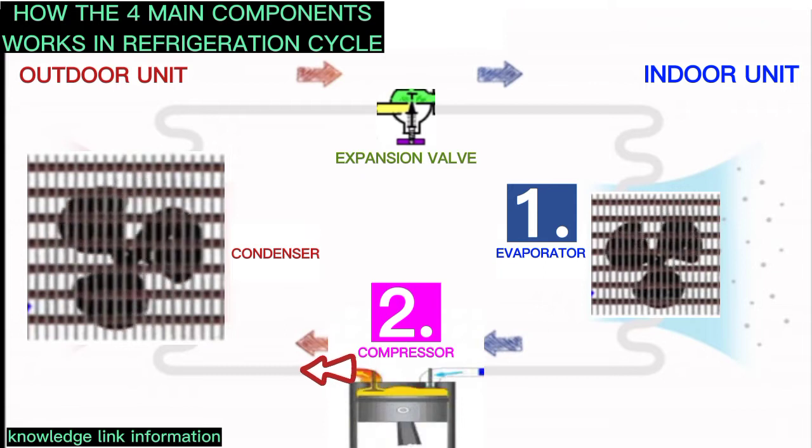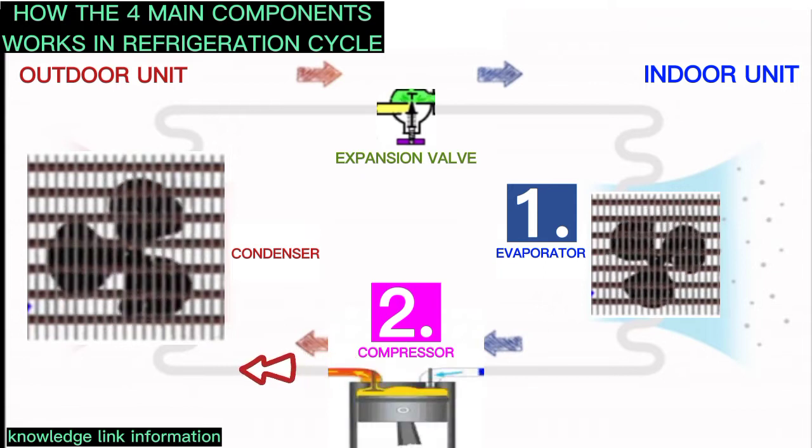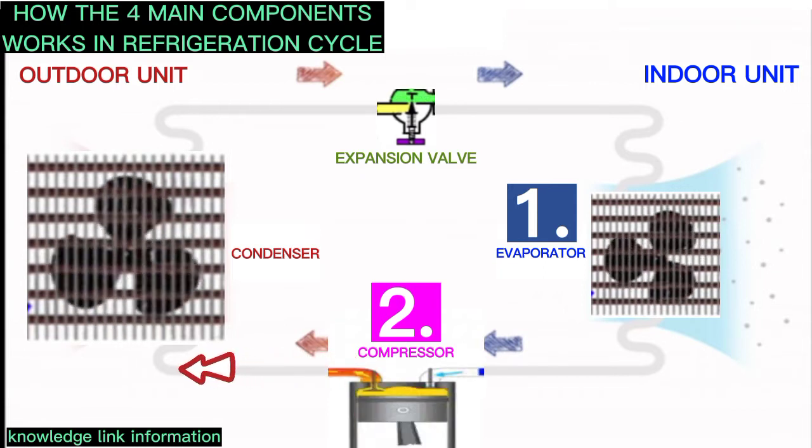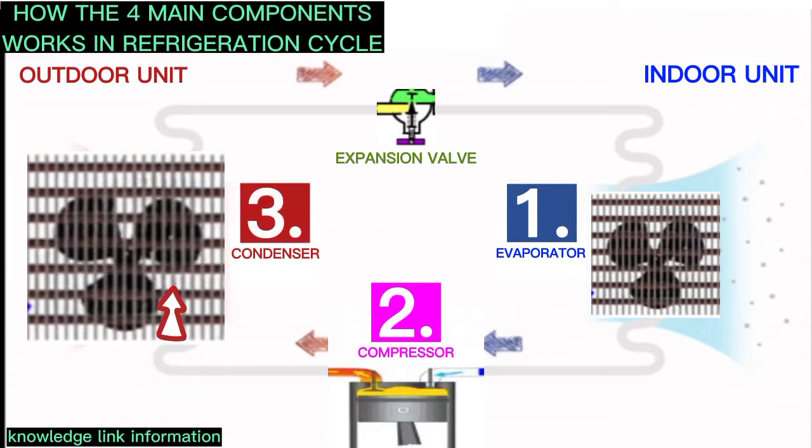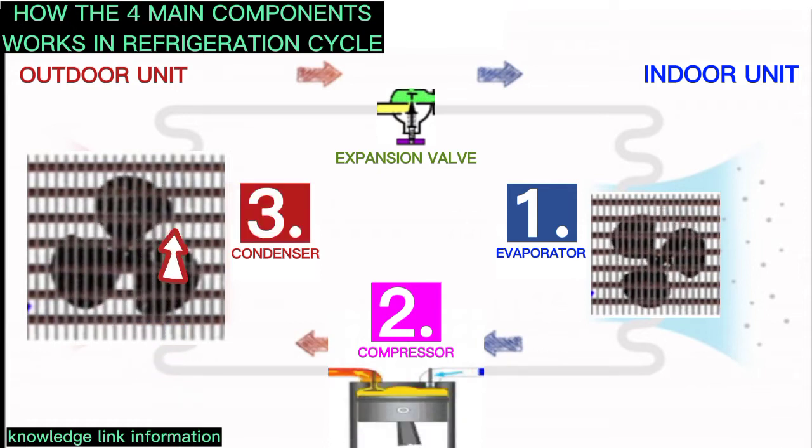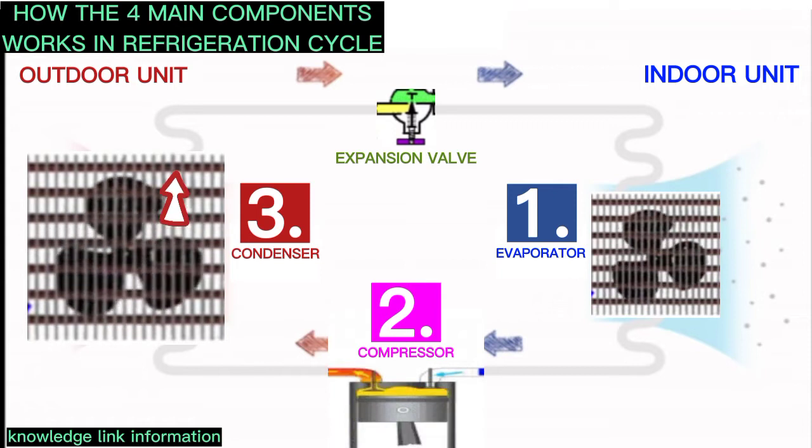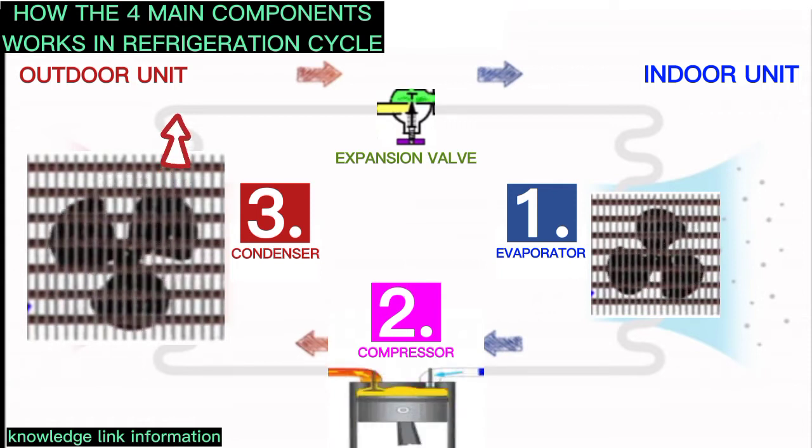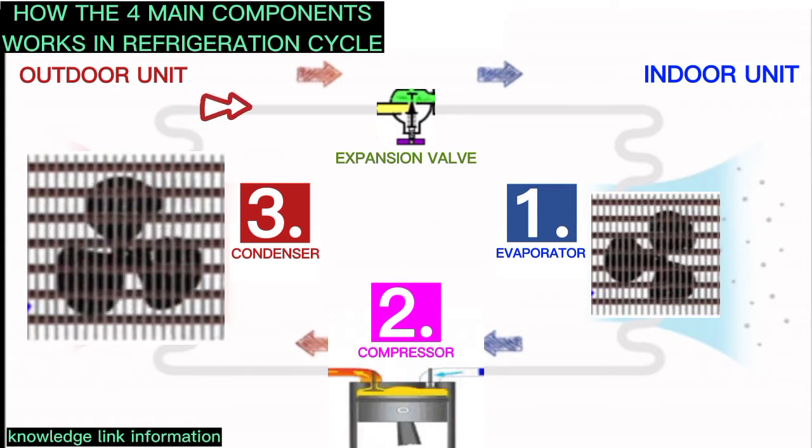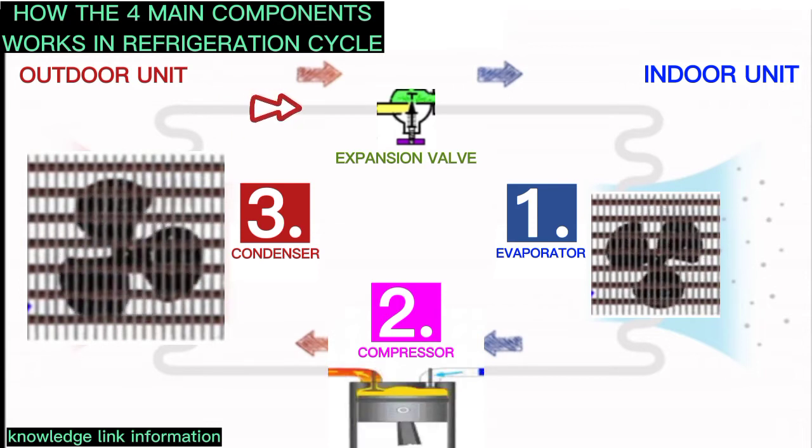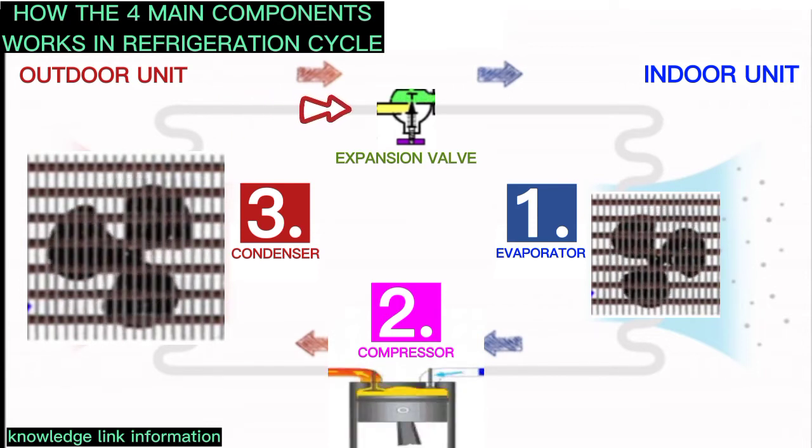Third, when hot vapor refrigerant with high pressure and high temperature is moving through the condenser, it will change from vapor into liquid refrigerant again, releasing the heat into condenser sink going to any cooling surface.